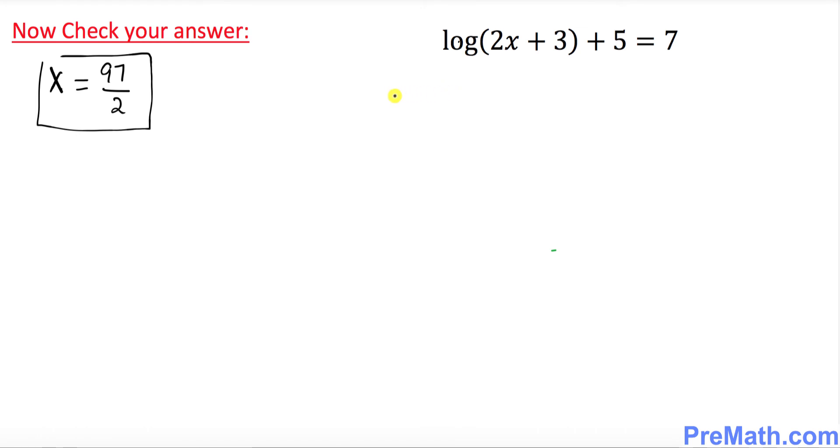And finally, we will check our answer for any extraneous solution. Let's go ahead and plug it in. Wherever you see x, replace it by 97 over 2. So that means log of 2 times 97 over 2 plus 3 plus 5 equals 7. By default, the base is 10 as we discussed in the previous step. So this 2 and 2 cancel out.